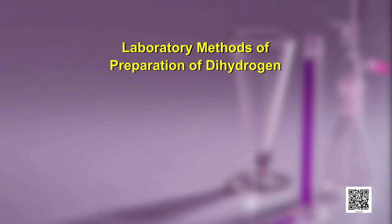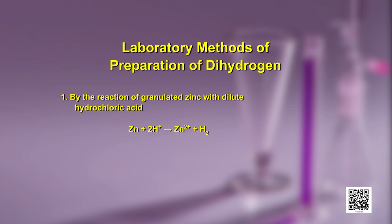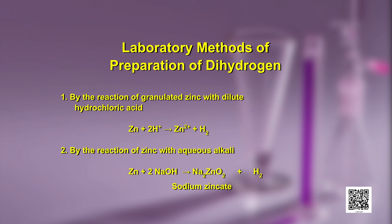Having understood the properties of isotopes of hydrogen, let us see how dihydrogen can be prepared by different methods in the laboratory and commercially. We will first focus on the laboratory methods. There are two main methods: first, by the reaction of granulated zinc with dilute hydrochloric acid — Zn + 2H⁺ → Zn²⁺ + H2. In the second method, zinc is used in basic medium with aqueous alkali in the presence of sodium hydroxide, giving sodium zincate and dihydrogen as products.